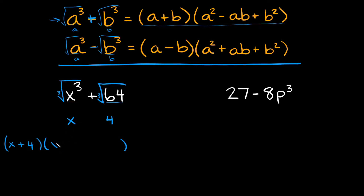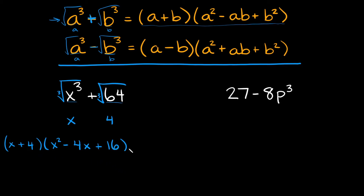In the second set of parentheses it's going to be A squared minus AB plus B squared. So here we're going to have x squared, minus A times B which is x times 4, so we write that as 4x, and then plus B squared, which is plus 4 squared. We can simplify 4 squared — that's just equal to 16. So this would simply be your answer.